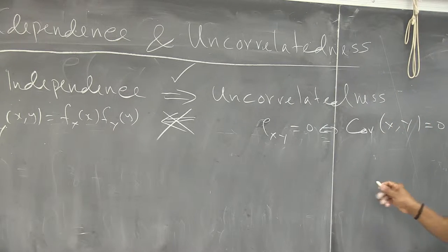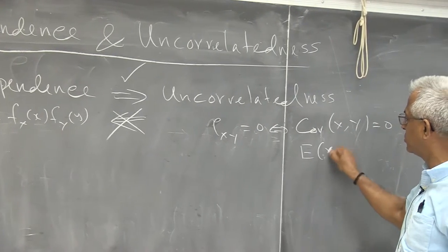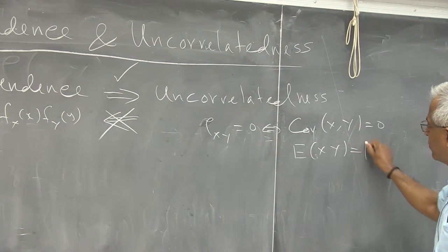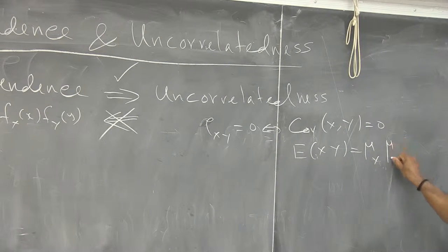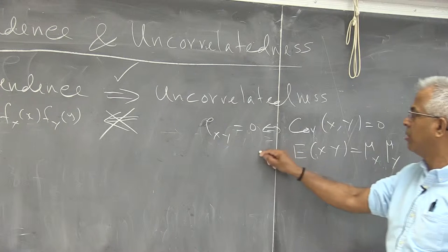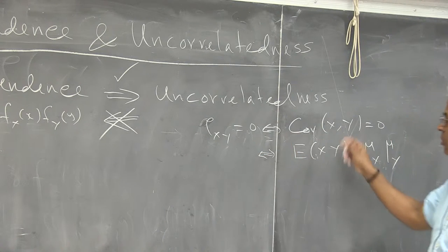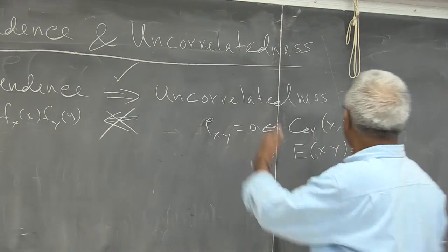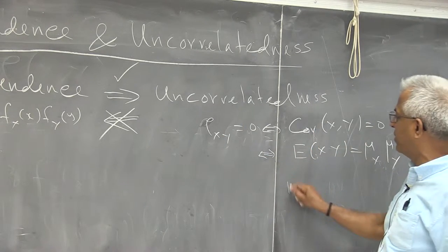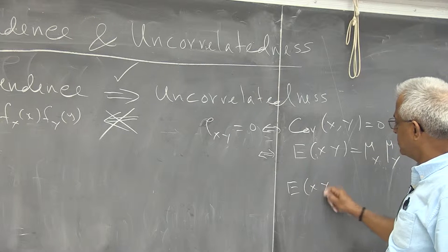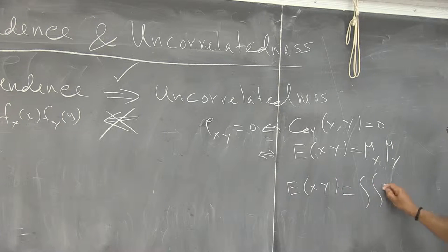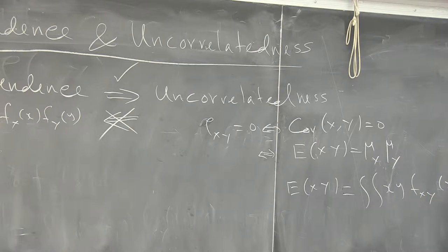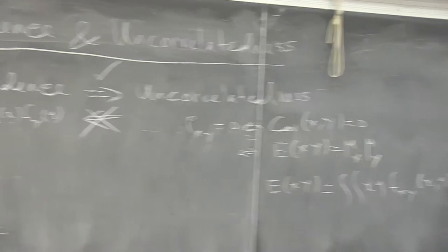Either one of these conditions suffices. This is the same as showing that the expected value of xy equals mu_x multiplied by mu_y. If you can show any one of these, that will establish that the variables are uncorrelated. Now, the expected value of xy is the double integral of x·y·f(x,y) dx dy.